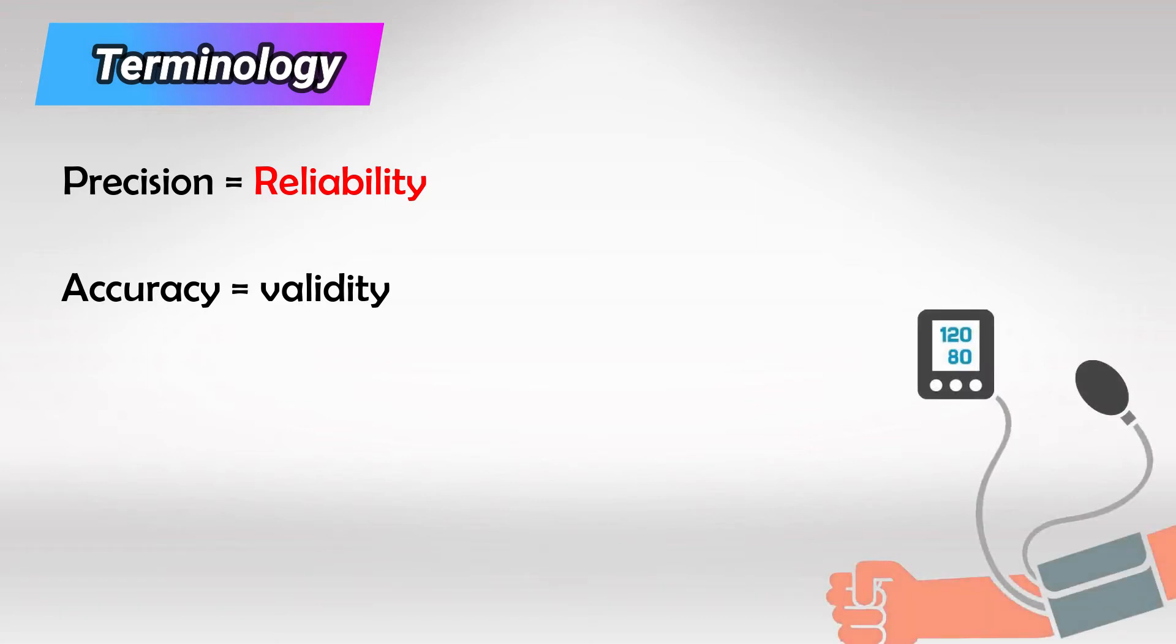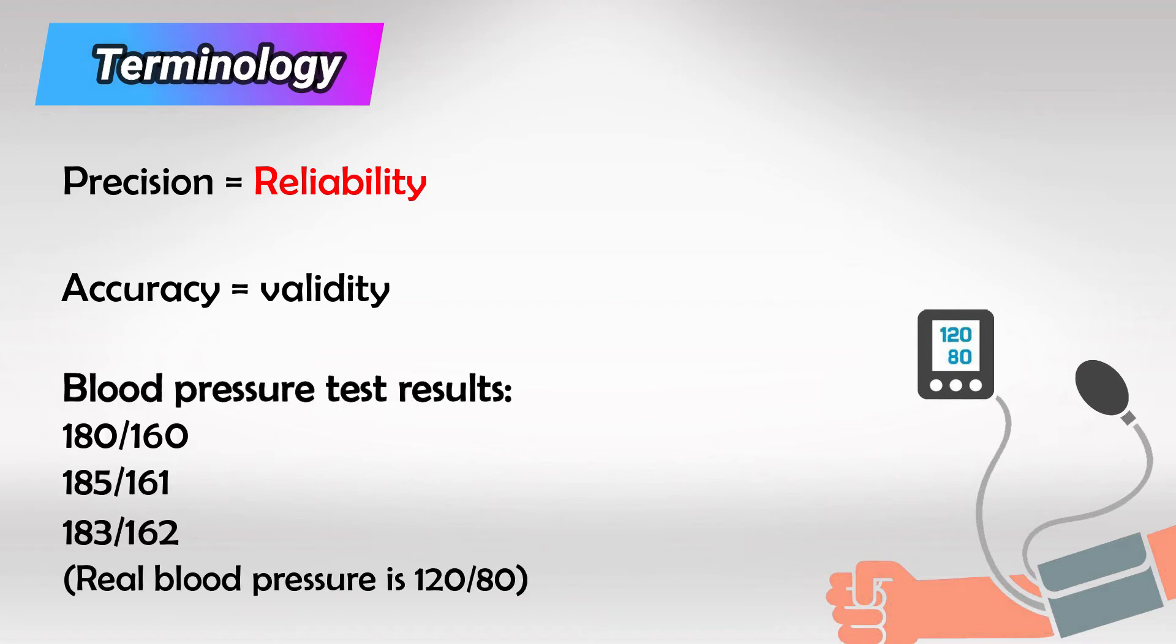For example, if we have a blood pressure machine and we test a patient and it shows that their blood pressure is 180 over 160, and then we keep testing again and again, and every time we test them it keeps showing somewhere around 180 over 160, this machine has very high reliability or precision.